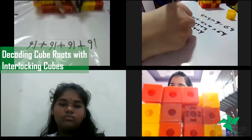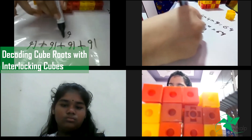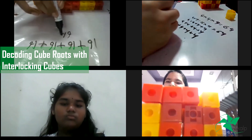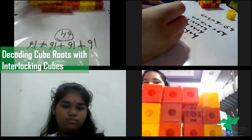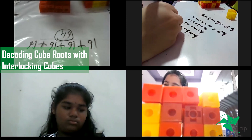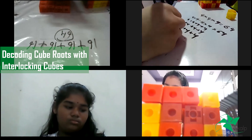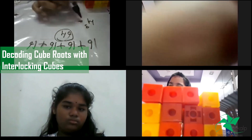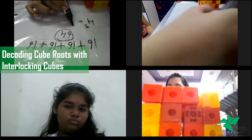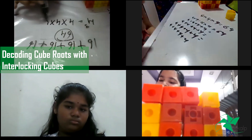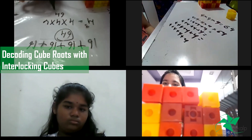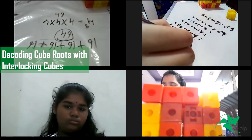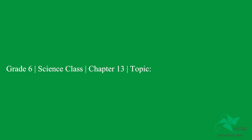So when you add them all together, you will get 64. So that means the cube number of four is 64. The cube of four is 64.